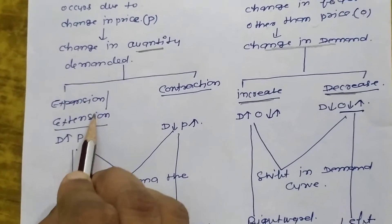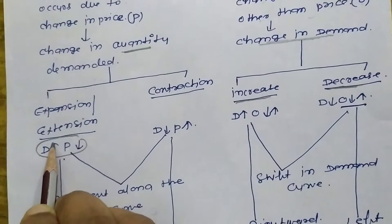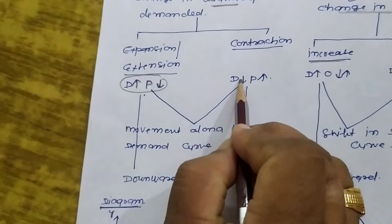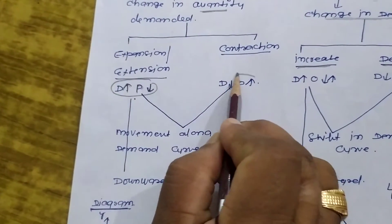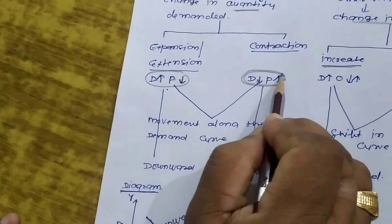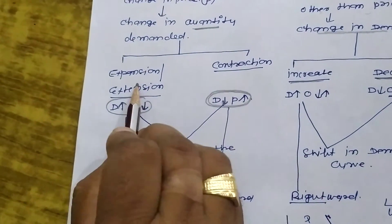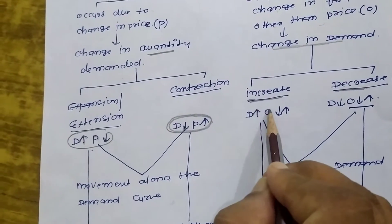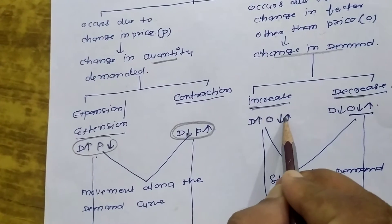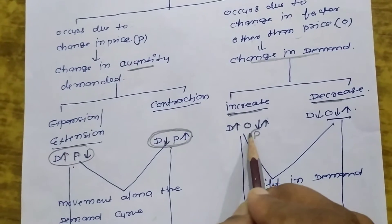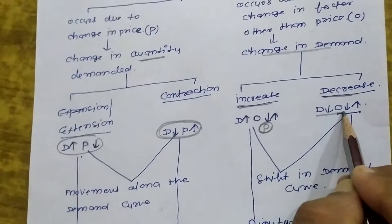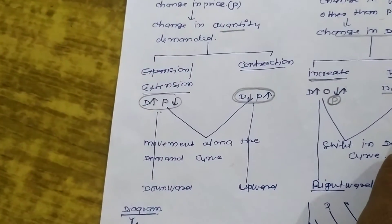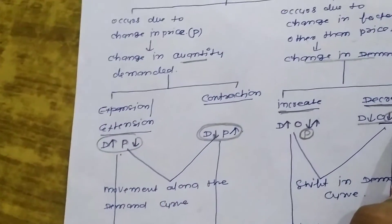Expansion in demand — what does expansion in demand mean? Demand will expand when price falls. And contraction means when price increases. Now, increase in demand: demand increases when other factors increase or decrease, as the case may be, but price remains constant here. Demand decreases when other factors increase or decrease, but price remains constant.